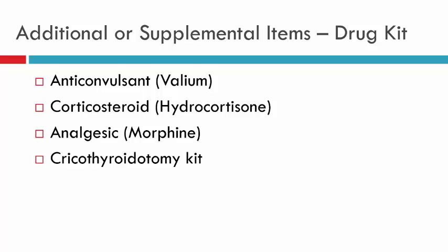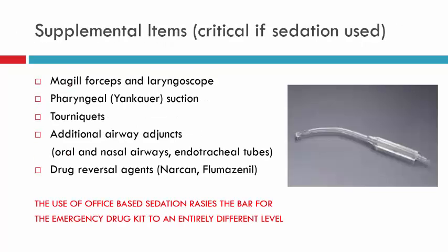For offices performing sedation, the bar is raised entirely. In addition to the previously mentioned items, sedation clinics should have a McGill forceps and laryngoscope for emergency intubation, pharyngeal suction, tourniquets, additional airway adjuncts including oral, nasal, and endotracheal tubes, and drug reversal agents — Narcan for narcotics and flumazenil for drugs like Versed or Valium. Office-based sedation raises the emergency drug kit requirements to an entirely different level.